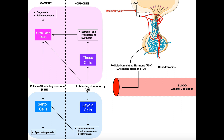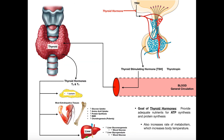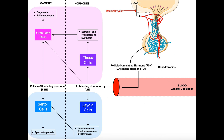Before concluding, let's discuss the negative feedback characteristic of all these hormones — just as we see with growth hormone, thyroid hormone, and cortisol. The gonadotropins FSH and LH can feed back and inhibit the release of gonadotropin-releasing hormone from the hypothalamus. If we have plenty of FSH or LH, we don't need more, so these two hormones inhibit GnRH release, which in turn inhibits their own release and brings levels back down to baseline.